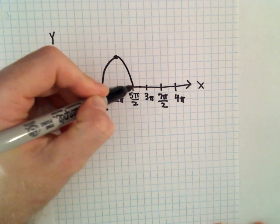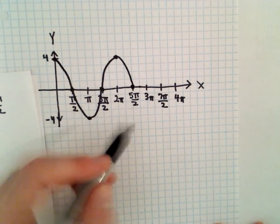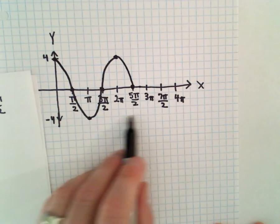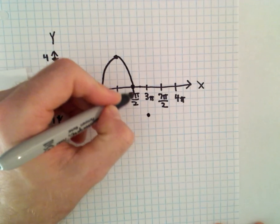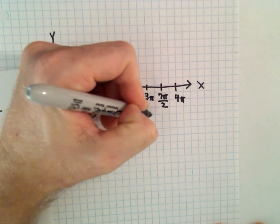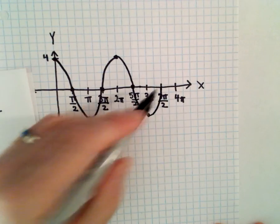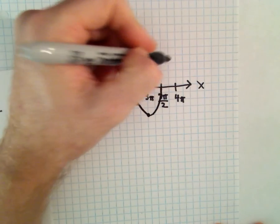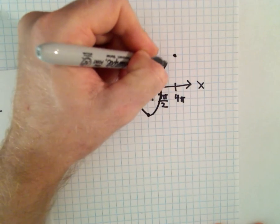At five pi over two, it'll be zero. At three pi, we'll be back at negative four. Seven pi over two, I'm back at zero, and then at four pi, you'll be back at positive four.